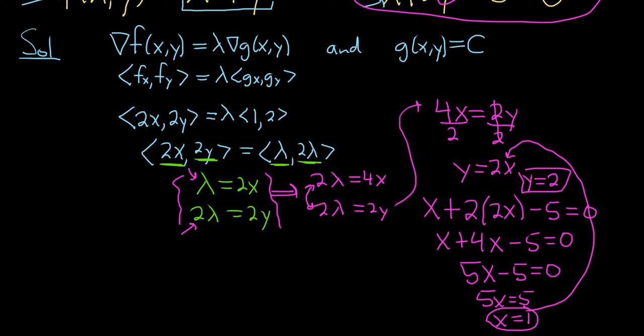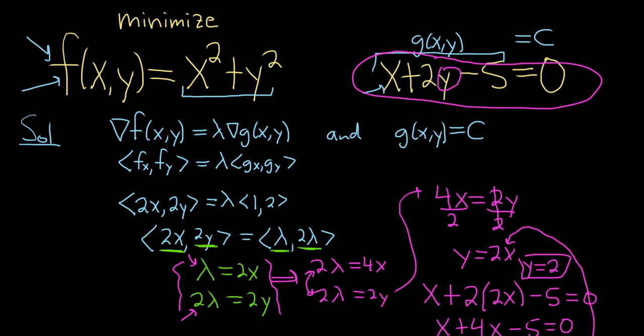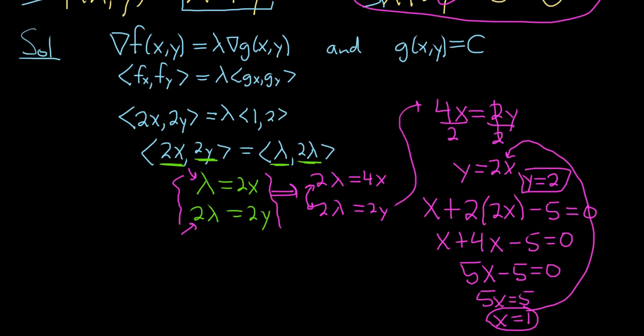So we have x, we have y. Now we can find the, what was it in this problem? It was a minimum, right? So x is 1, y is 2. Our original function was f(x,y), which is equal to x squared plus y squared. So all we do is we plug these numbers in. So we have f(1,2).